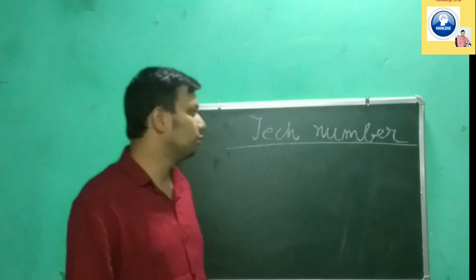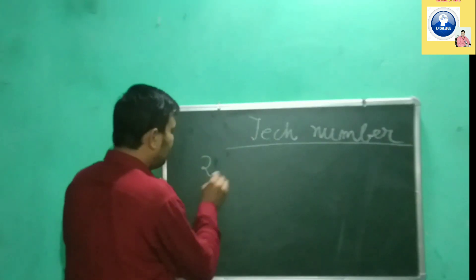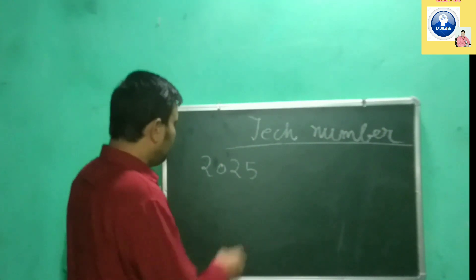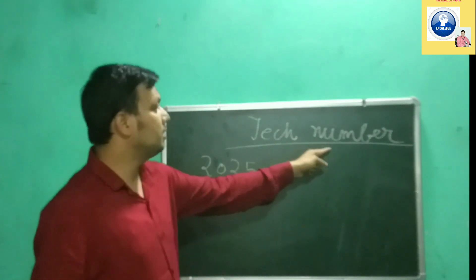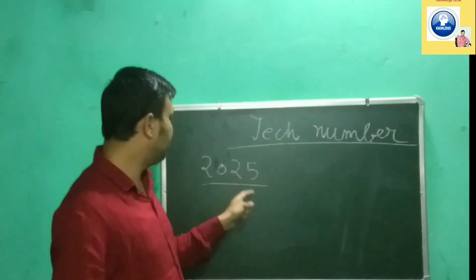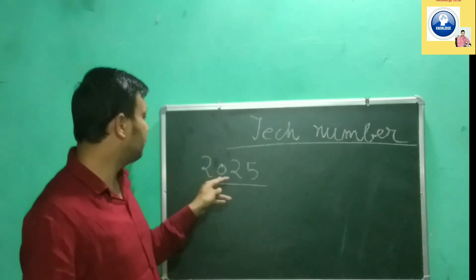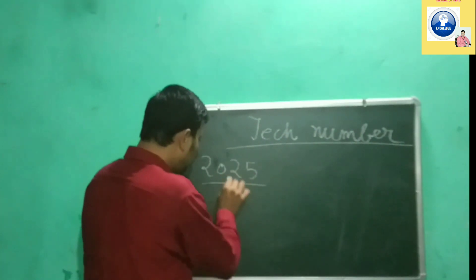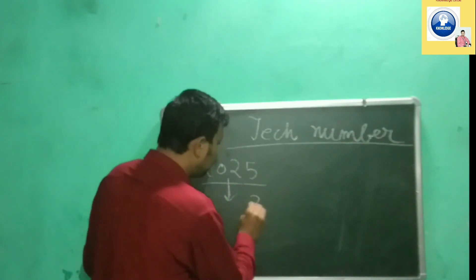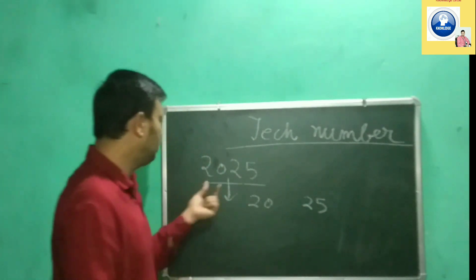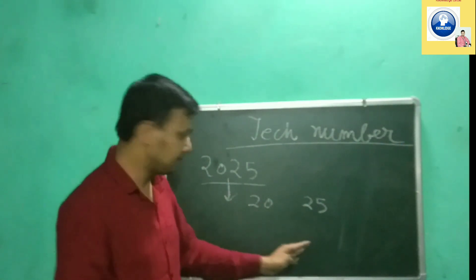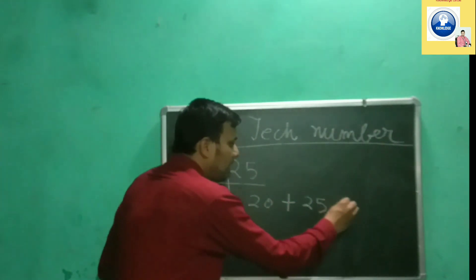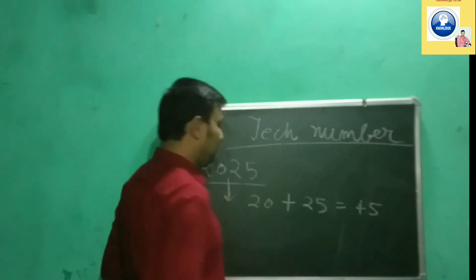Today we will see a program based on Tech Number. First, let's understand what a Tech Number is. Take the example 2025 — the first condition is that a number's digits must be even. 2025 has four digits, and 4 is an even number. When you divide it from the middle, you get 20 and 25. Adding them gives 45.